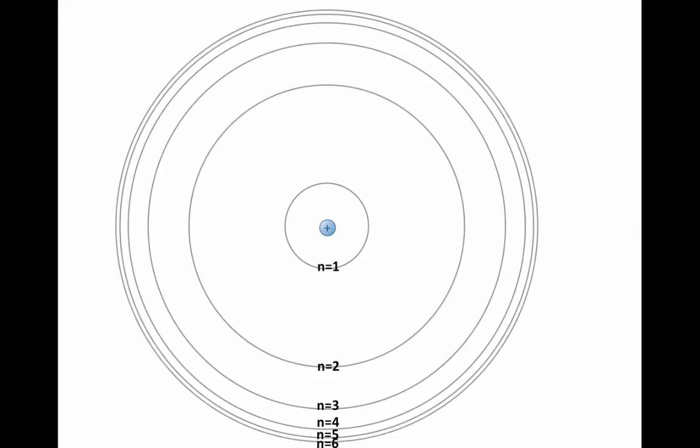This model begins with a nucleus at the center, with a single proton in it since this is for hydrogen, and rings for the electrons known as orbits. These rings are simply numbered, n equals 1, 2, 3, 4, 5, 6, etc.